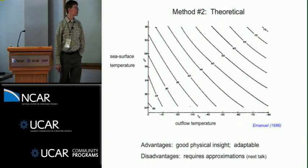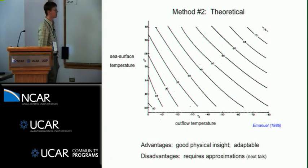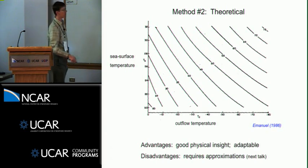So method number two, the theoretical. Here's a figure from the famous article by Kerry Emanuel. What's plotted here is the maximum sustained winds in these numbers as a function of the sea surface temperature but also what he calls the outflow temperature.